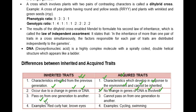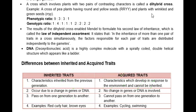Examples of inherited characters include red hair color, curly hair, and brown eye color. Examples of acquired characters include cycling and swimming — these are characteristics learned after birth that were not inherited from parents. That was all about the difference between inherited characters and acquired characters.